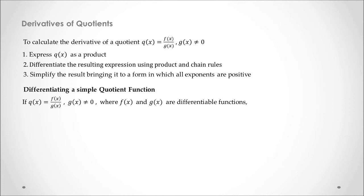Given this quotient q(x) which is f(x) over g(x) with g(x) different than zero, and f(x) and g(x) differentiable functions, we can convert this q(x) as a product.